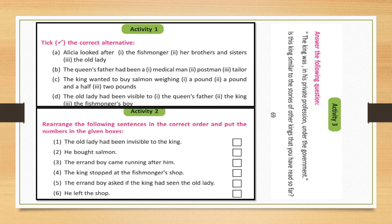Activity three: Answer the following questions. For example, 'The king was in his private profession under the government.' Is this king similar to the stories of other kings that you have read so far? You have read many stories about kings — discuss the similarities or differences. Please read the text carefully and answer the questions. More such activities will follow after completing the text.